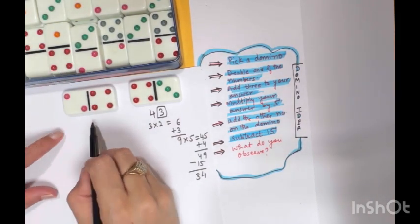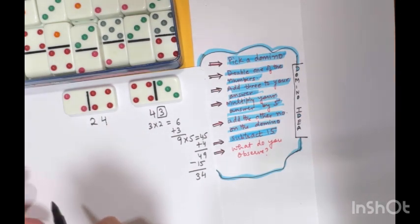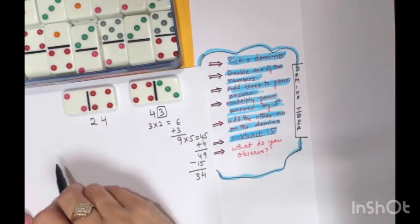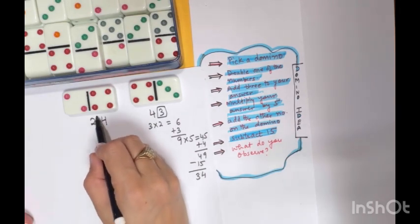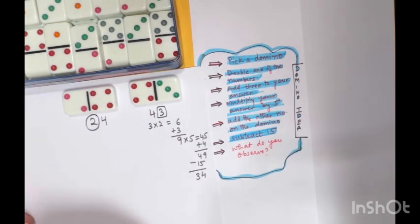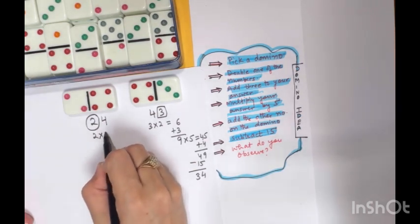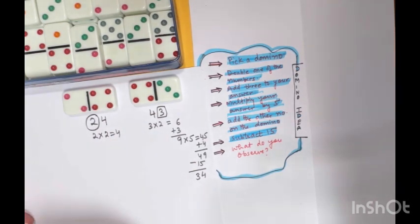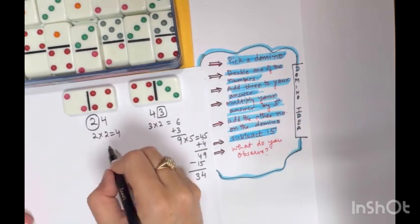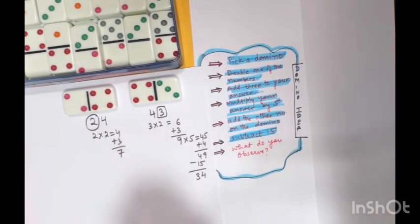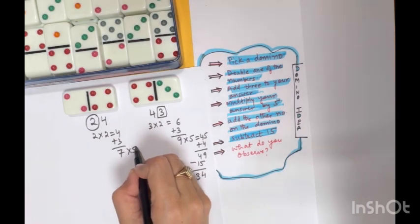Here the number is 24. What is the first step? Choose any number from the domino, so I'm taking 2. Double the number, so 2 times 2 gives us 4. Add 3 to it, that is 7. Multiply this by 5, this is 35.